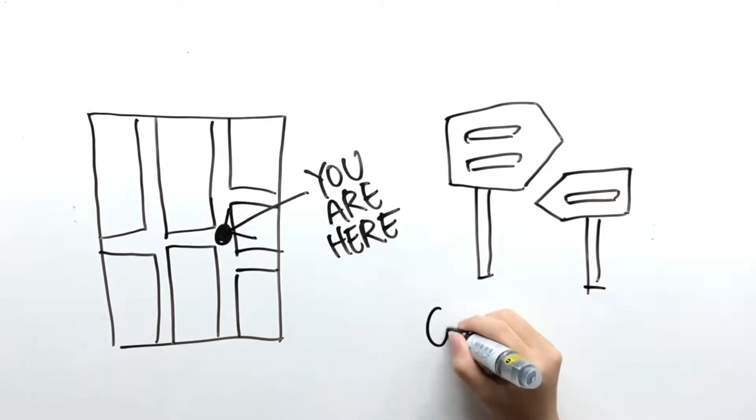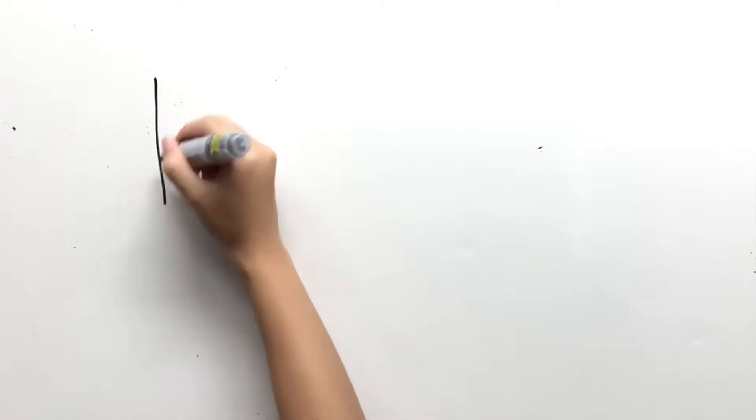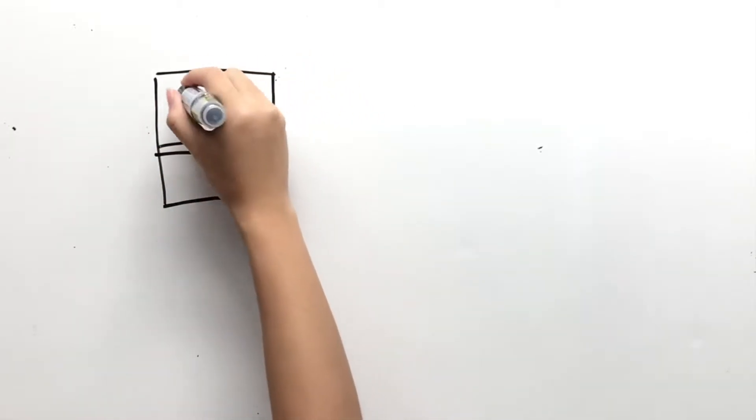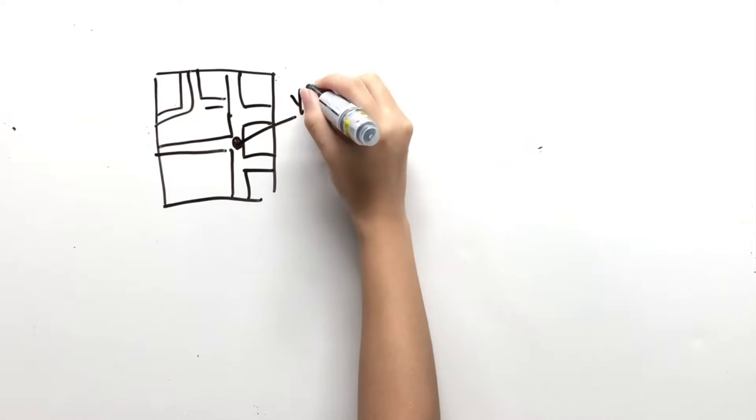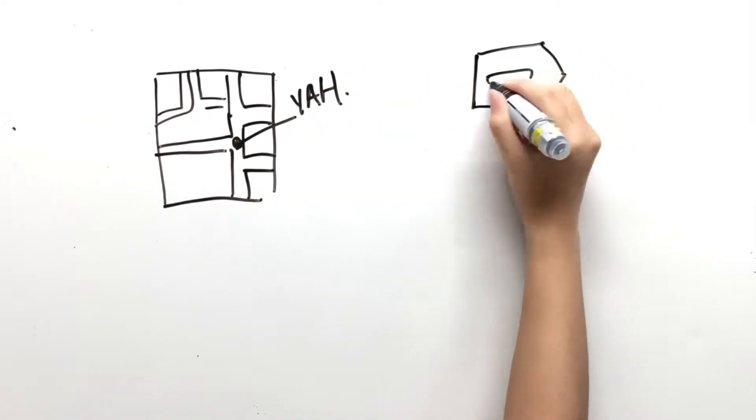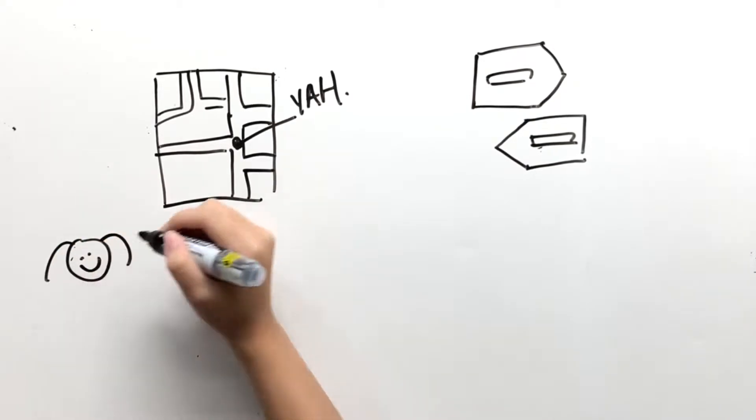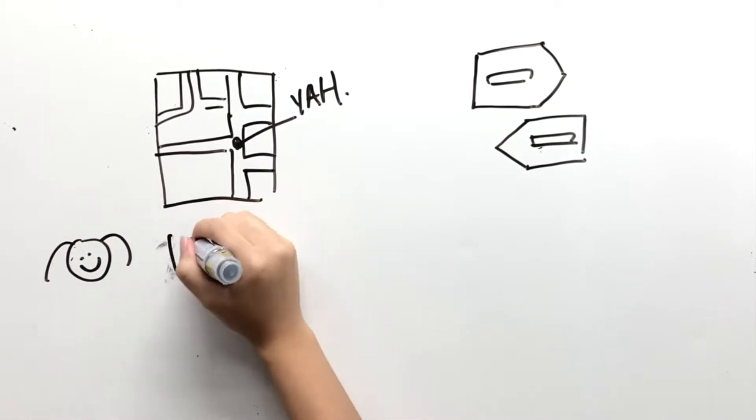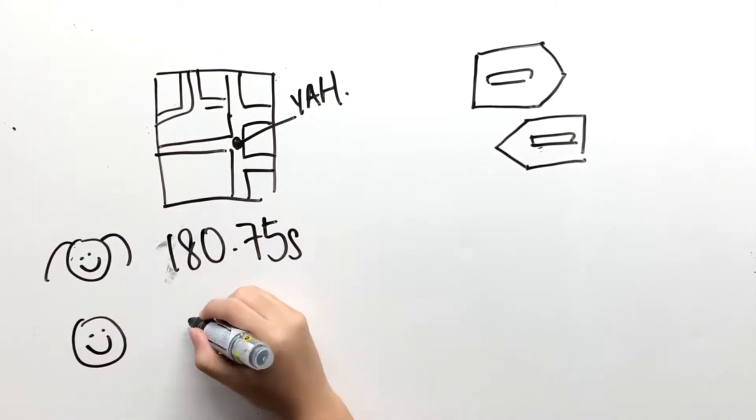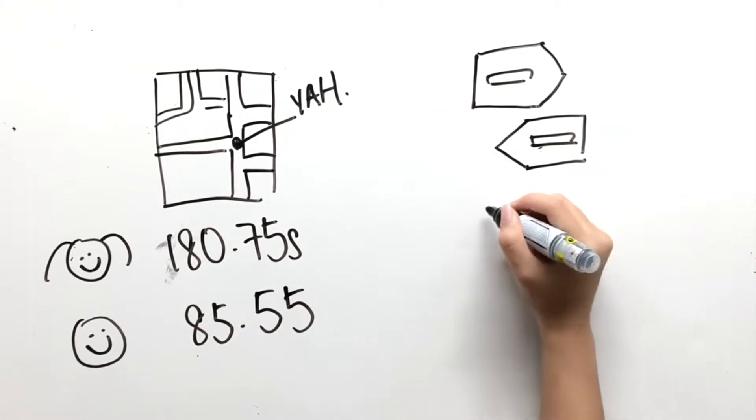You are here maps and guide signs. We measured the time taken for both genders to complete their task. Females took an average of 180.75 seconds when using the you are here maps, while males took only 85.55 seconds. With guide signs, females took 57.95 seconds while males took 71.55 seconds.